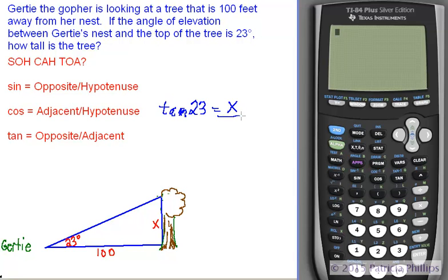We need to isolate our x and so we're going to multiply both sides by 100. The 100s are going to cancel out on the right hand side and on the left you're going to be left with 100 times tan of a 23 degree angle. And I'm going to rewrite that as tan 23 times 100 and it all equals x.